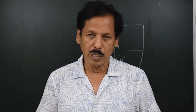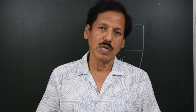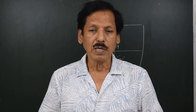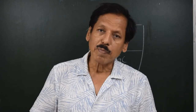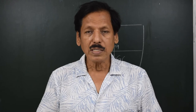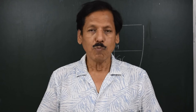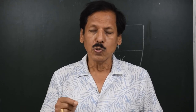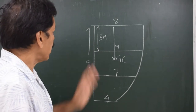Rule number two is used when the number of ordinates is 3n plus 1, meaning the number of segments is divisible by three — for example, three, six, nine segments. When the number of segments is three, we use 1-3-3-1 as multipliers. For six segments: 1-3-3-2-3-3-1. For nine segments: 1-3-3-2-3-3-2-3-3-1.